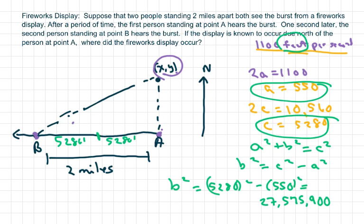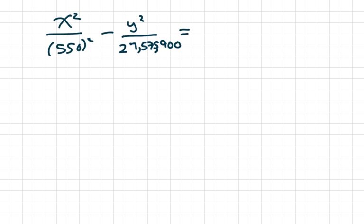So that's your B squared. And I'm going to just write my equation on the next slide. So I didn't take the square root of it because we have the squared anyway. So we have X squared over 550 squared minus, remember your equation of hyperbola, minus Y squared over B squared. And our B squared, we didn't take the square root of it, so we already know what it is: 27,575,900. That equals 1.